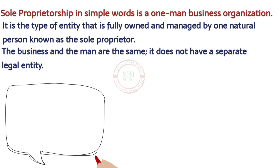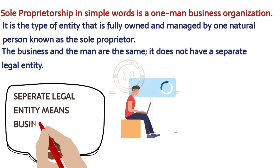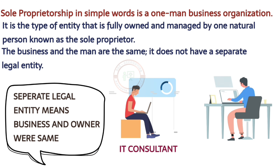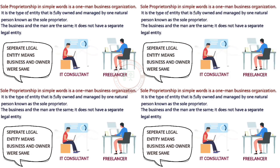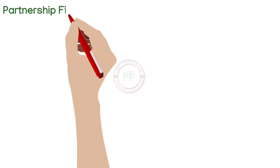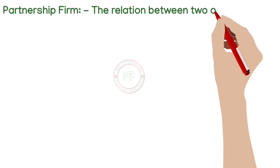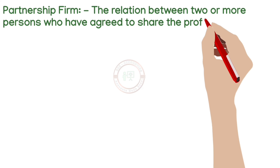There is no separate legal entity. Examples include an IT consultant, a freelance writer, or a freelance graphic designer. Now the next one is partnership firm — here two or more persons will come together to do a business.